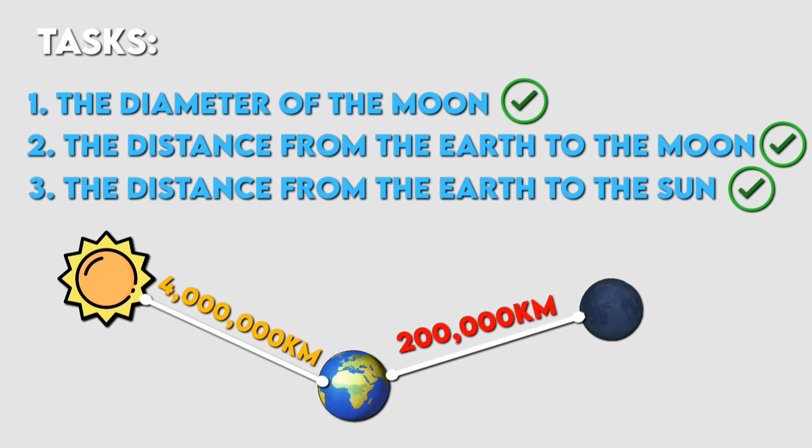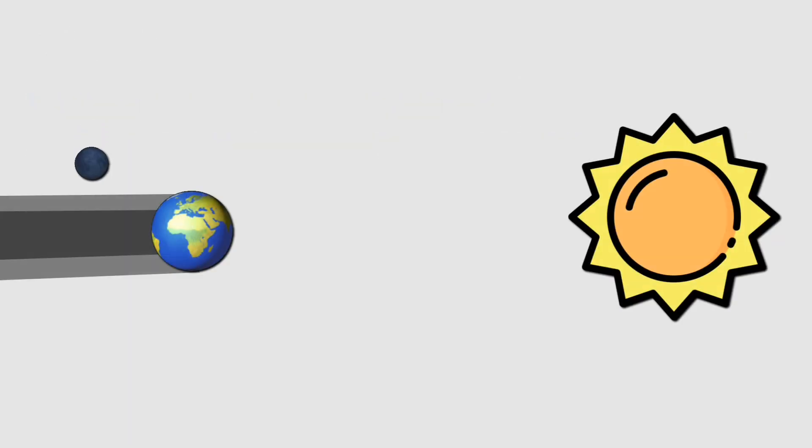However, modern measurements show that the actual Earth-moon distance is 384,000 kilometers, not 200,000 as Aristarchus calculated. This error arose because he did not account for the fact that during a lunar eclipse, the Earth's shadow has a faint outer region, the penumbra, meaning that the fully dark portion does not represent the Earth's full diameter.